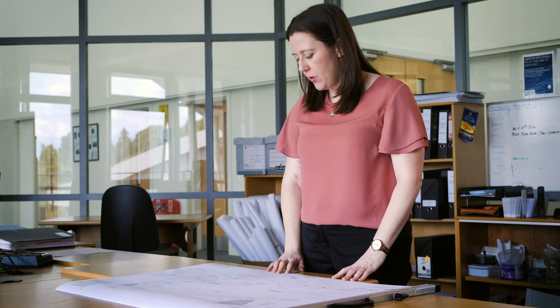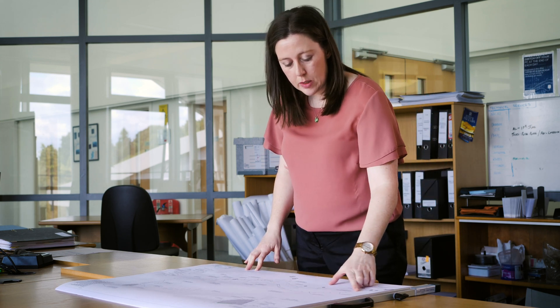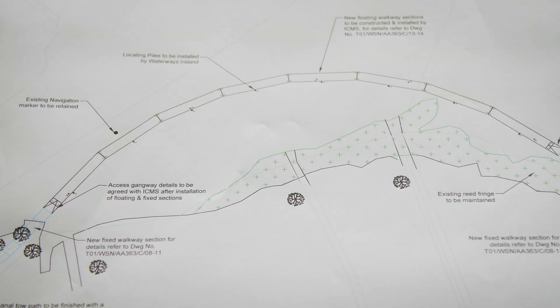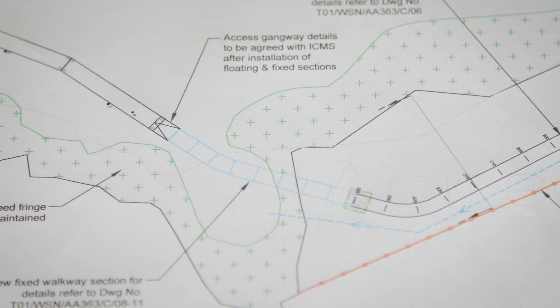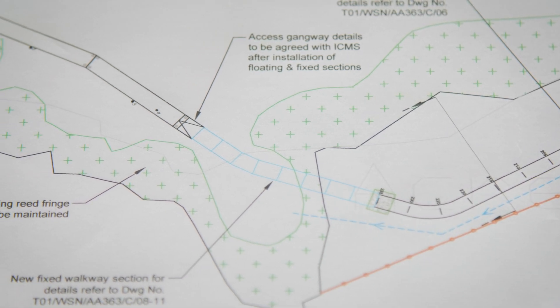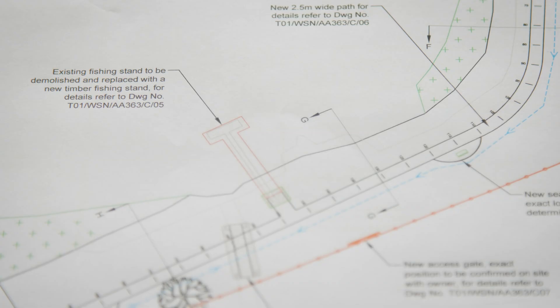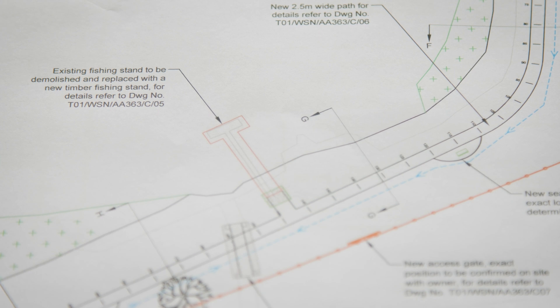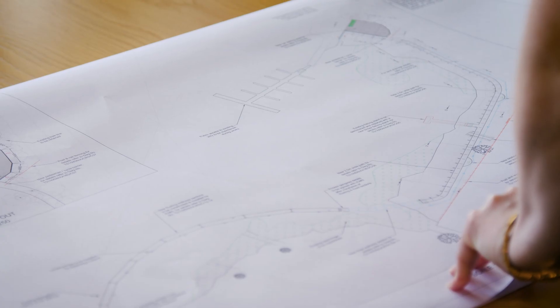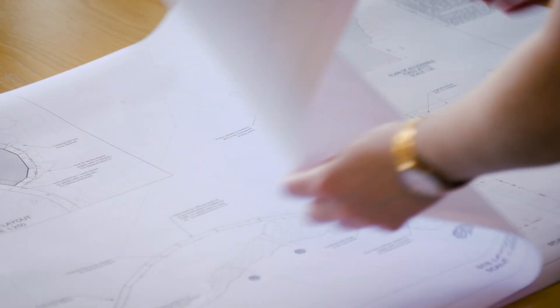These are the actual plans that we used for the construction of our boardwalk and path. What we have here is the boardwalk section — this is our floating boardwalk, and just on the approaches to the land on either side is our fixed boardwalk sections. We also have a nice fishing stand which will replace the existing fishing stand, and this also acts as a nice viewing area.